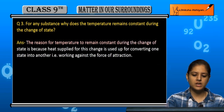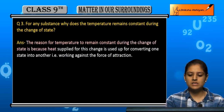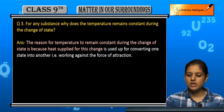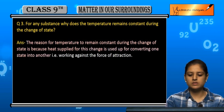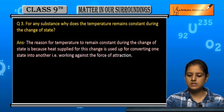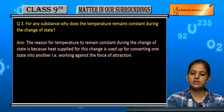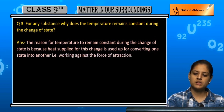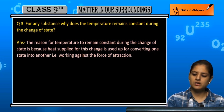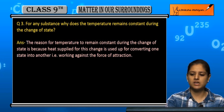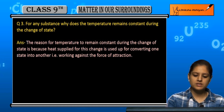So the reason for temperature to remain constant during the change of state is because the heat supplied for this change is used up for converting one state into another — that is, working against the force of attraction. Matlab agar ham kisi bhi cheez ko convert kar rahe hain dousari state mein.